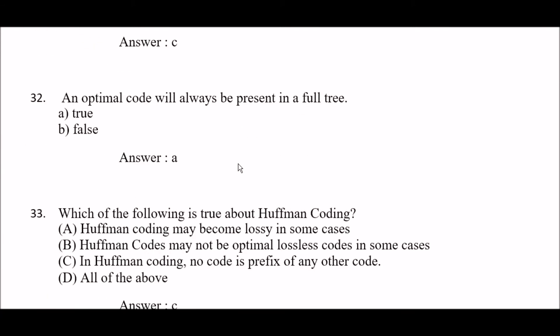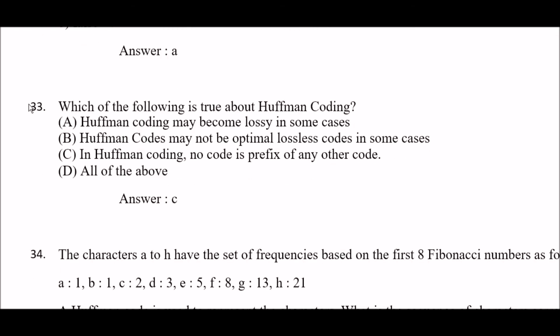An optimal code will always be present in a full tree — true or false? The right answer is true, because an optimal tree will always be present in a full tree, not a half tree. Next: which of the following is true about Huffman coding? Option A: Huffman coding may become lossy in some cases. Option B: Huffman codes may not be optimal lossless codes in some cases. Option C: in Huffman coding, no code is a prefix of any other code. Option D: all of the above. The right answer is option C — in Huffman coding, no code is a prefix of any other code.